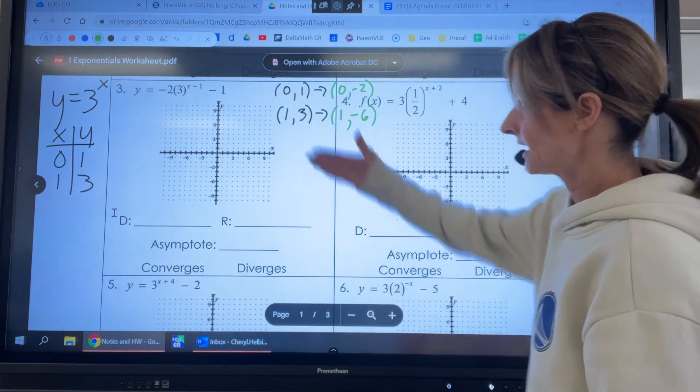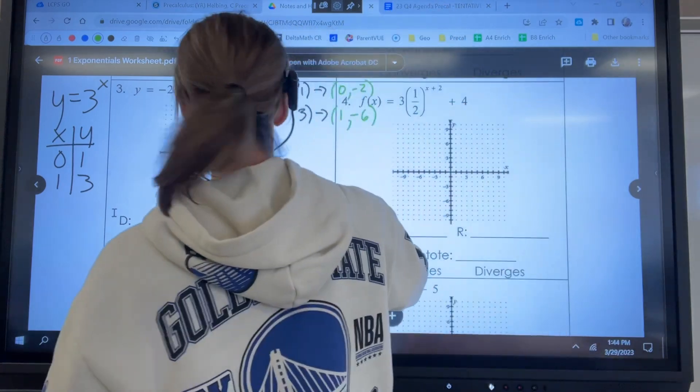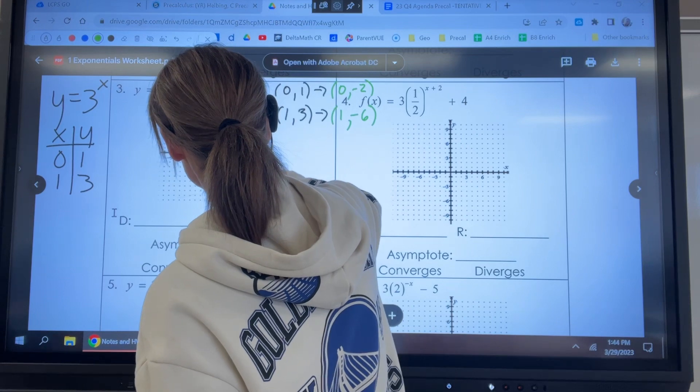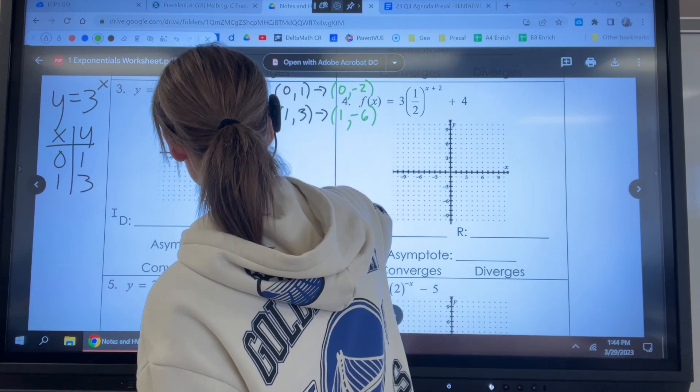Same thing. Okay, so now we have a reflection. All right, so let's see. Let me plot those two points and then we'll move them. So you got zero, negative two, and one, negative six.